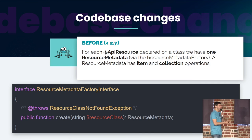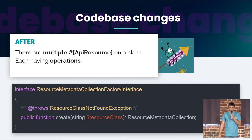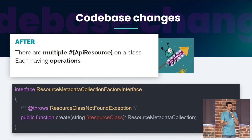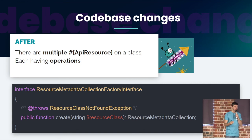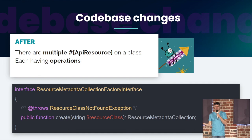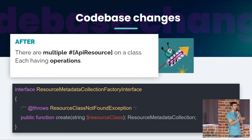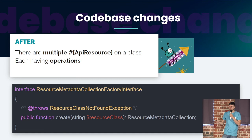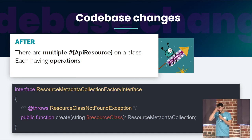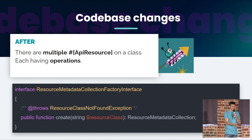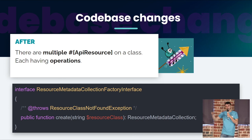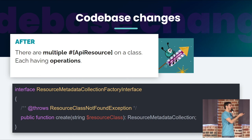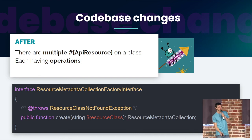Before 2.7, it has item and collection operations. Today, we can declare multiple PHP attribute API resources on a class, each having operations. We remove the item and collection difference to simplify things. I have done this new interface — resource metadata collection factory interface — which returns not one resource metadata but many resource metadata.